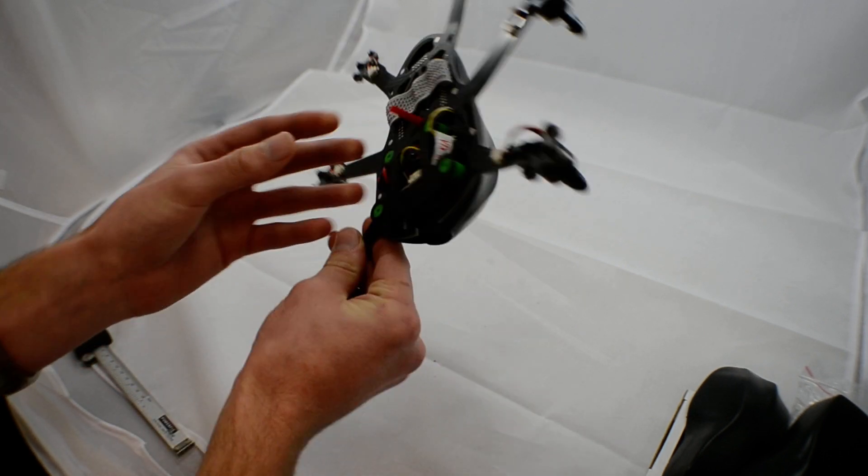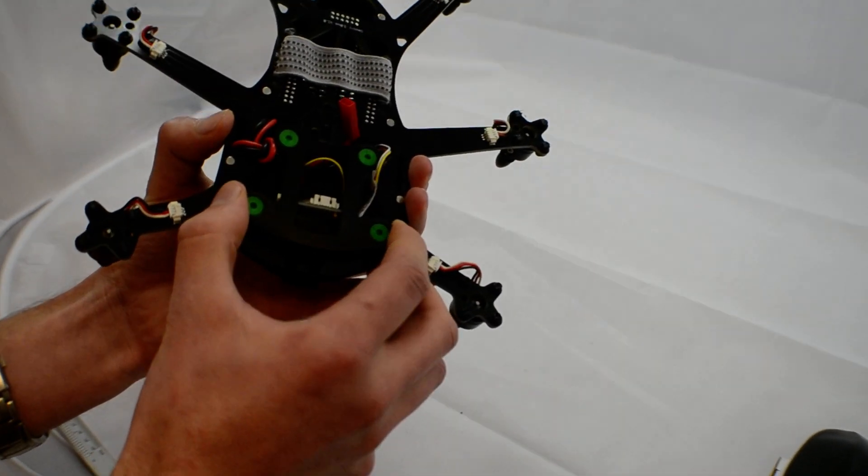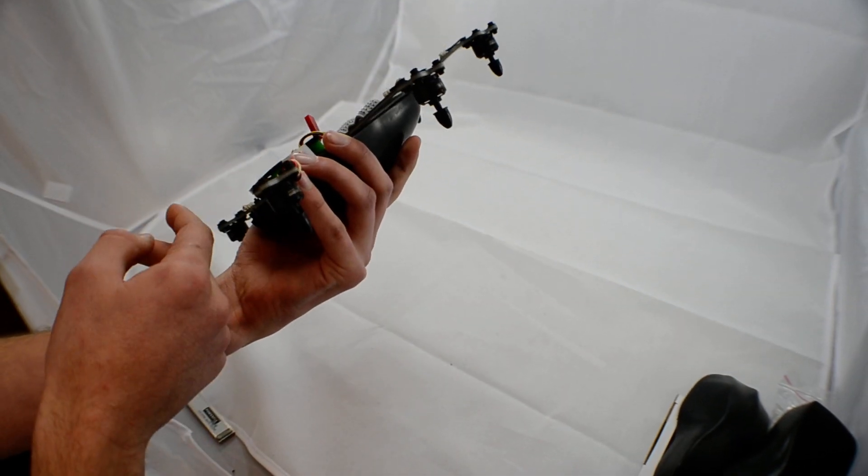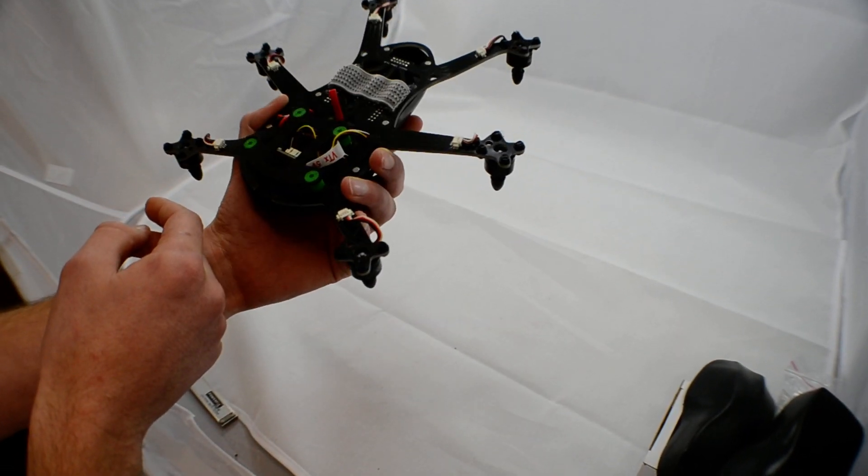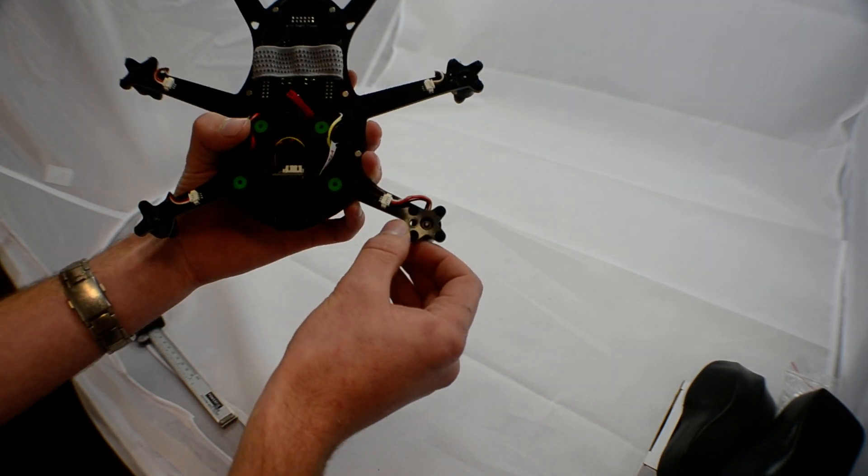You flip it upside down. You've got the Mobius mount which is vibration isolated using the familiar TBS Pro bobbins so they look nice. And the motors are plugged in using these molex connectors here which is also quite a nice feature.